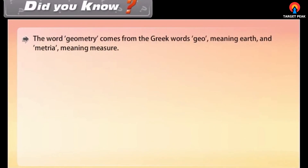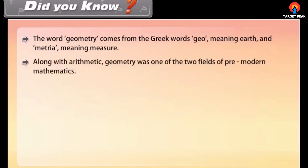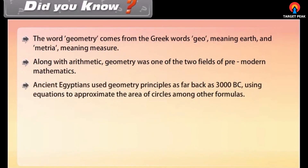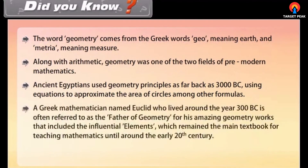Did you know? The word geometry comes from the Greek words 'geo' meaning earth and 'metria' meaning measure. Along with arithmetic, geometry was one of the two fields of pre-modern mathematics. Ancient Egyptians used geometry principles as far back as 3000 BC. A Greek mathematician named Euclid, who lived around 300 BC, is often referred to as the father of geometry for his influential work 'Elements,' which remained the main mathematics textbook until around the early 20th century.